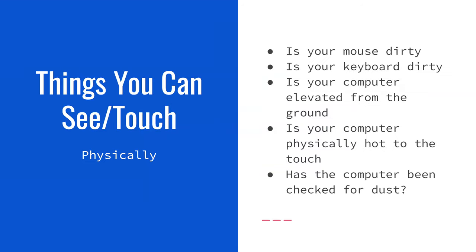First section is physical — just things you can see and touch. Visually, is your mouse dirty? Is your keyboard dirty? These are things we interact with on a daily basis. If your mouse isn't moving properly and you're using an actual mouse, turn it over and see if there's any dust trapped on the underside — that can cause a lot of issues. If your keyboard feels like it's sticking or one key doesn't work as well, you can definitely try and clean your keyboard.